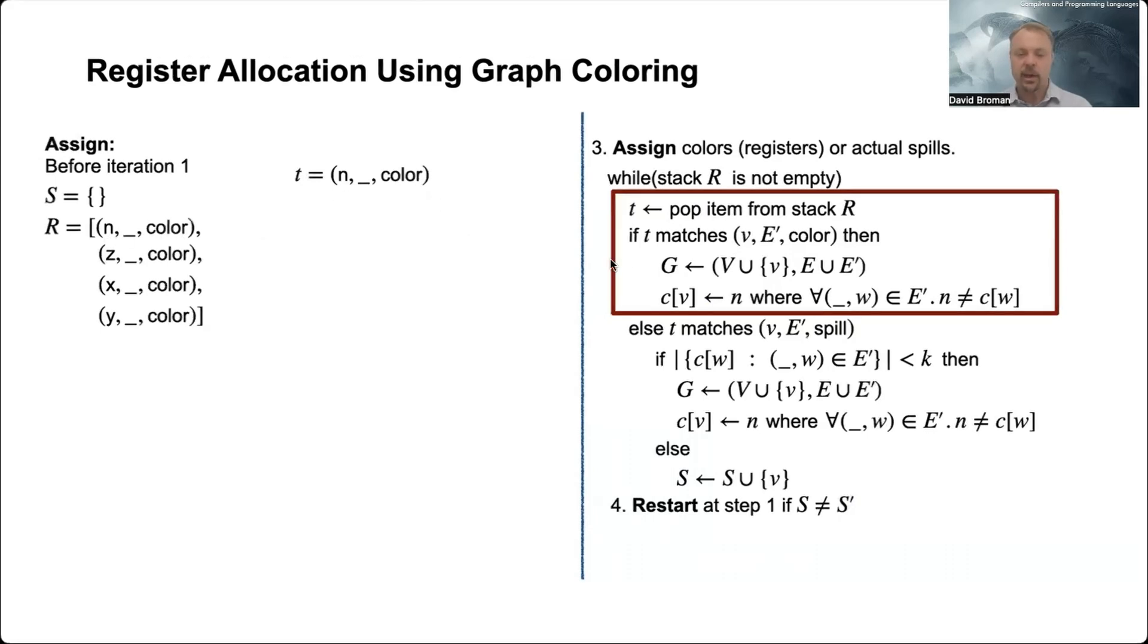That was on the top of the stack. So that's why we get this t equals n. And it says that if this matches, then we go into the true branch. And what we're actually matching on is this tag here. So if it matches color, then we enter here.